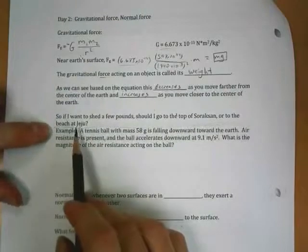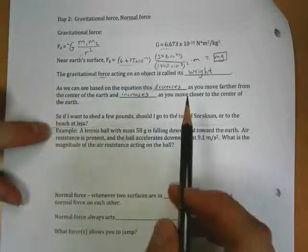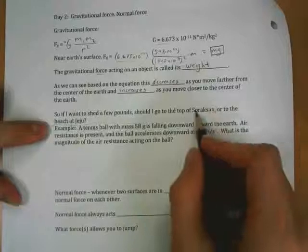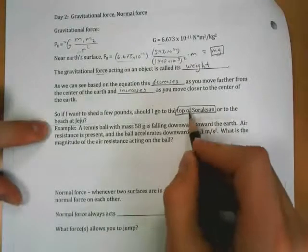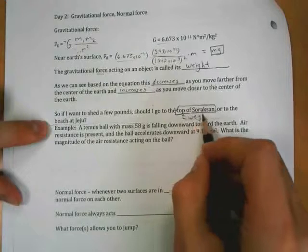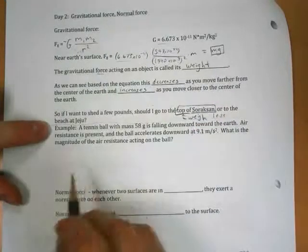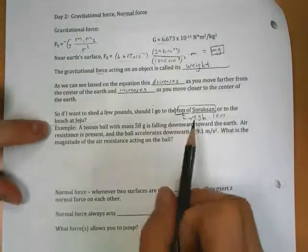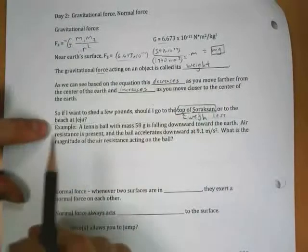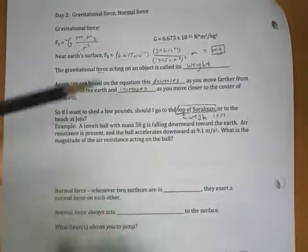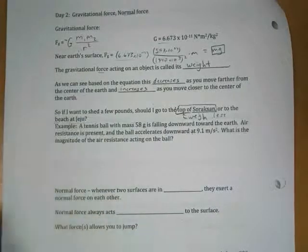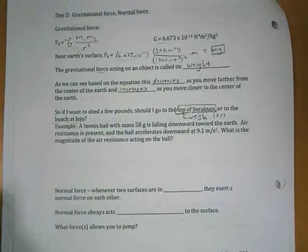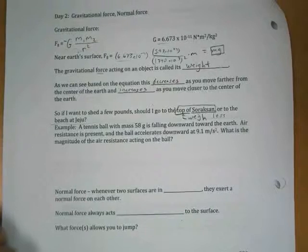Well, think about this. Up on top of a mountain, I'm farther from the center of the earth. So up on top of Seoraksan, I will weigh slightly less. And also I might lose weight because I'm hiking a mountain. But just by changing my location to the top of Seoraksan, I would weigh slightly less than I did on the beach at Jeju. My mass is not dependent on my location. My mass on the top of Seoraksan or on the beach at Jeju or on the moon or wherever, my mass is going to be the same. But weight will change based on your location.